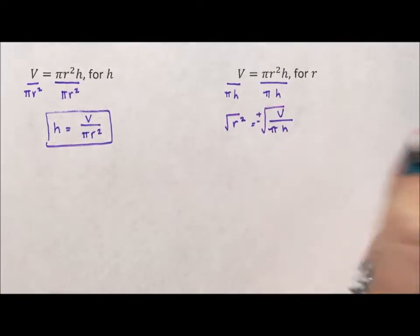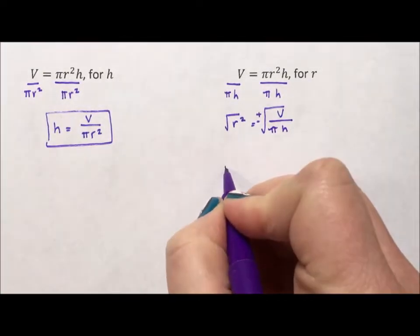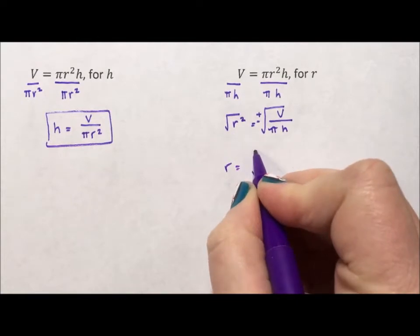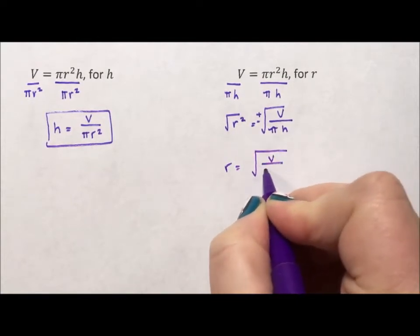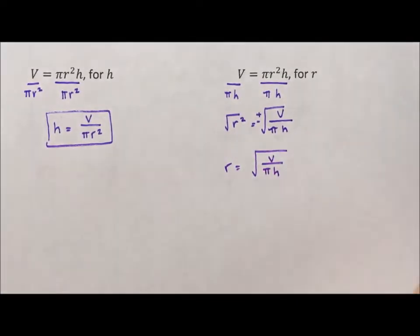Now, you're sitting there going, wait a second. A radius is a distance, and distance has to be positive, so it should only have a positive answer. So, the only plausible answer is the radius is the square root of the volume divided by pi h, which is mostly true.